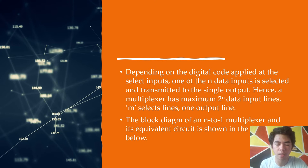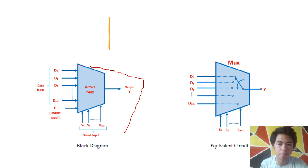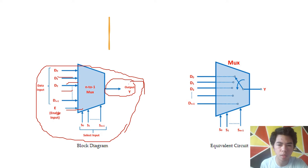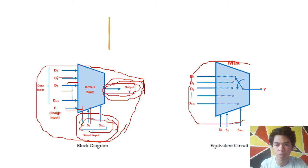The block diagram of an N-to-1 multiplexer is shown in the figure. You can see the data inputs D0, D1, D2, and so on. There is only one output. The M select inputs control which input is forwarded. In the equivalent circuit, you can see only one path going to output — if you select D0, the result is D0; select D1, the result is D1. That's how a multiplexer works.